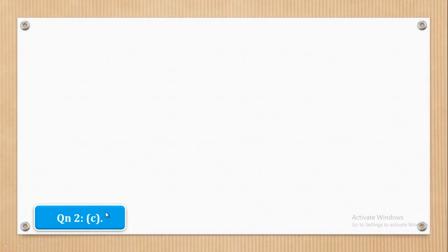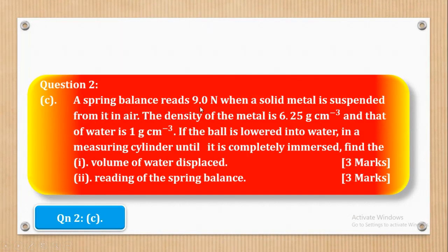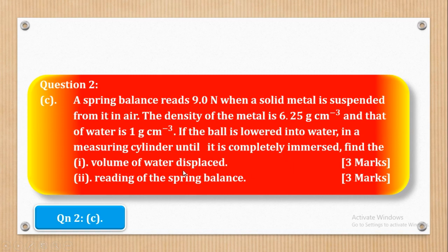Now part C: a spring balance reads 9 newtons when a solid metal is suspended from it in air. The density of the metal is 6.25 g/cm³ and that of water is 1 g/cm³. If the ball is lowered into water in a measuring cylinder until completely immersed, find: Roman 1 — the volume of water displaced (3 marks), and Roman 2 — the reading of the spring balance.